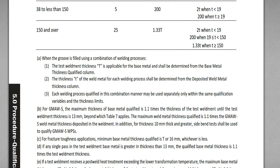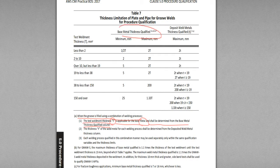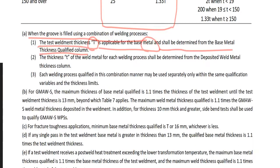Note number A: when the groove is filled using a combination of welding processes. Number 1, the test weldment thickness T — capital T — is applicable for base metal. Base metal thickness qualified shall be determined from the base metal thickness qualified column. Number 2, thickness — lowercase t — of weld metal for each welding process shall be determined from the deposited weld metal thickness column.